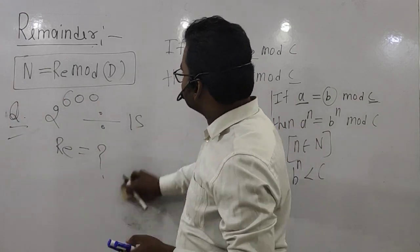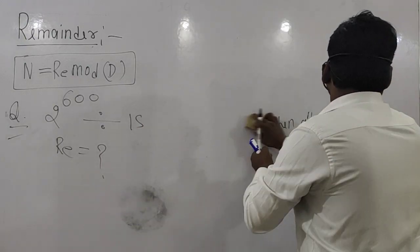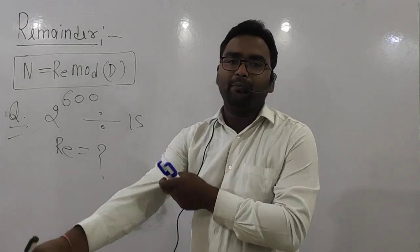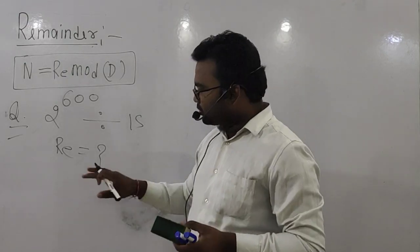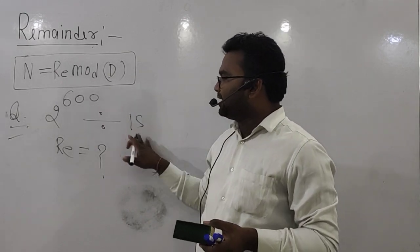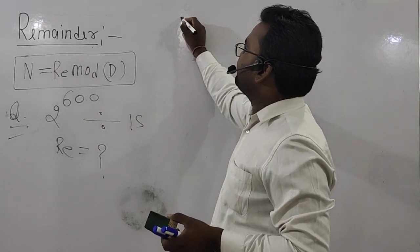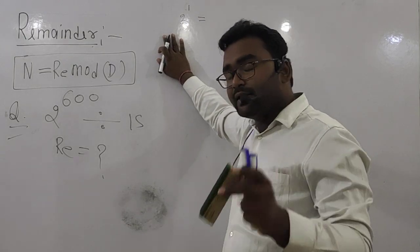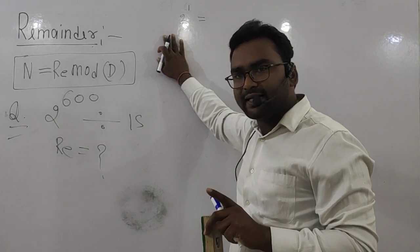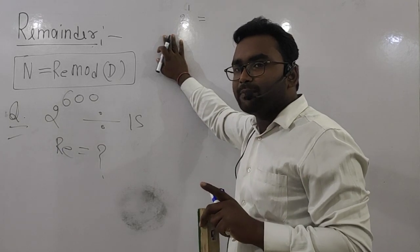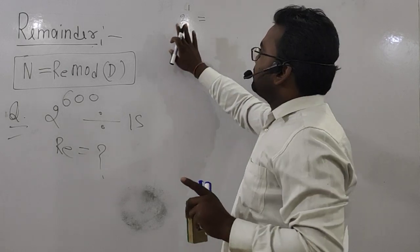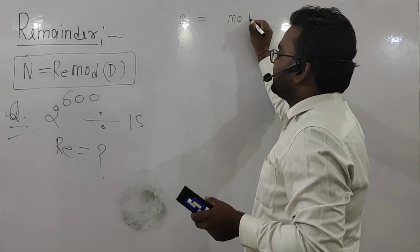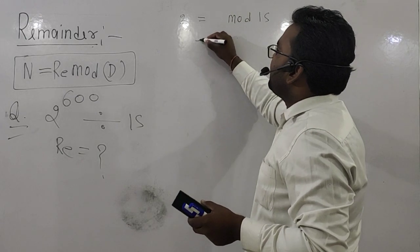Looking at this question, you might try to use a calculator, but the calculator itself says 'cannot determine.' So we need to use the concept. For 2^600 divided by 15, we use hit and trial. The first question will take a little time, but as you practice more problems, the time will minimize.